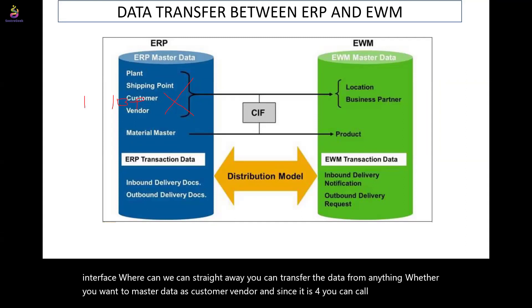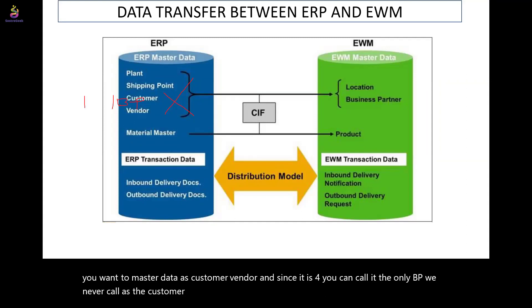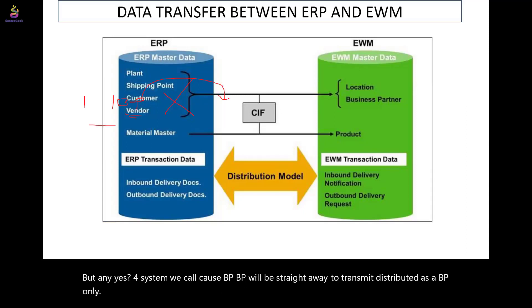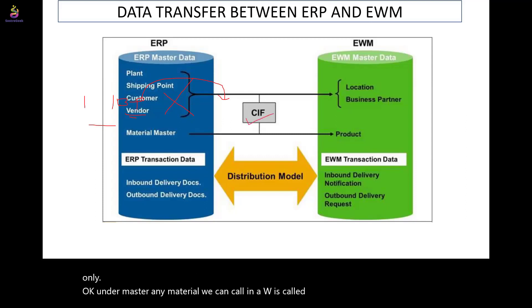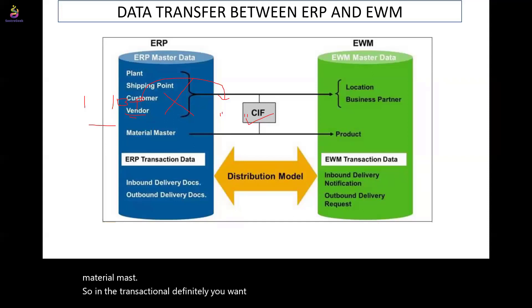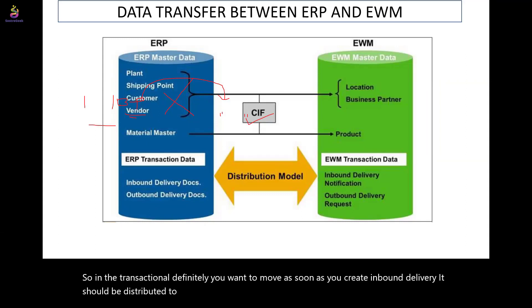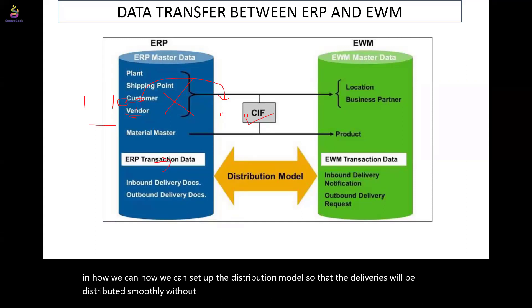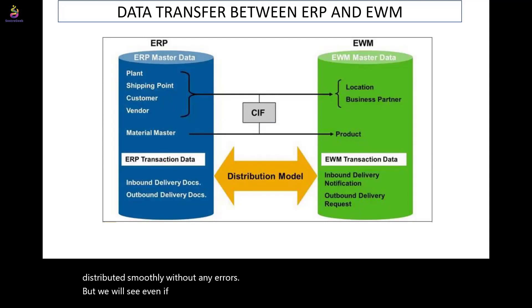In S4, customer and vendor are called business partner (BP) — you never use the customer/vendor terminology as in ECC. BP is distributed straight away as BP. Also, in EWM, material is called a product, not material. For transactional data, as soon as you create an inbound delivery, it should be distributed to the EWM system by generating the distribution model. We will see how to set up the distribution model so that deliveries are distributed smoothly without errors.